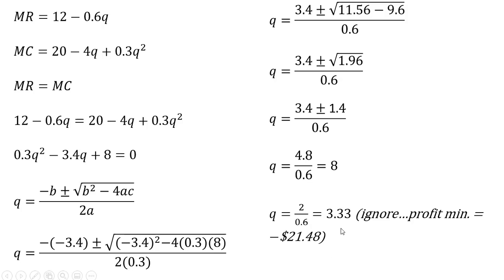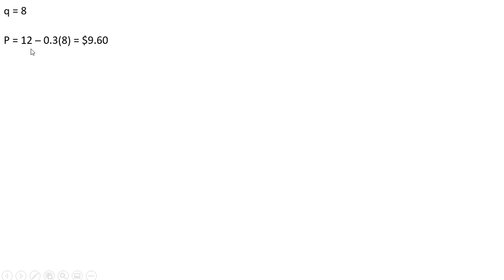What's happening graphically is that the marginal revenue curve is intersecting marginal cost when marginal cost is sloping downwards, so we're going to ignore that. Now when q equals 8, we plug that into the inverse market demand and we get a price of $9.60.